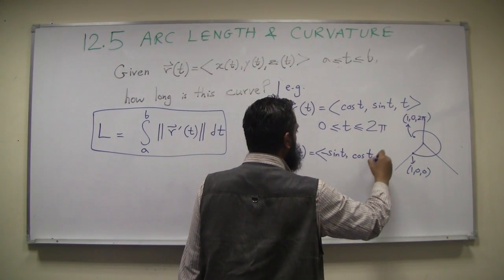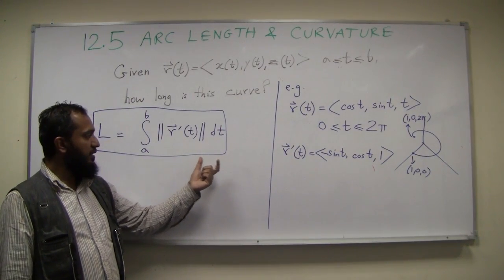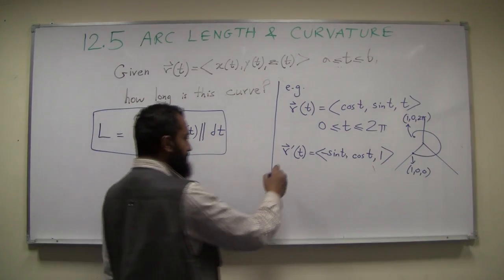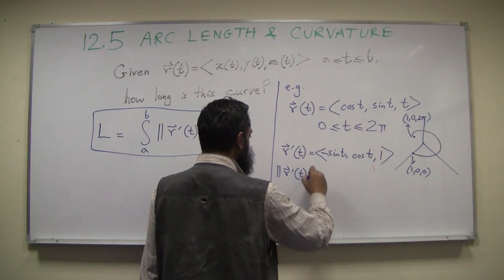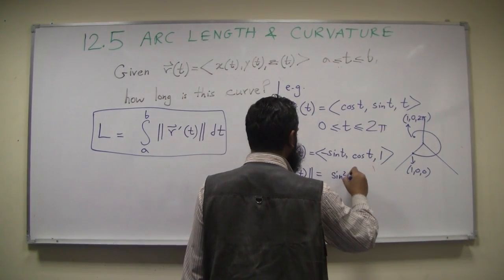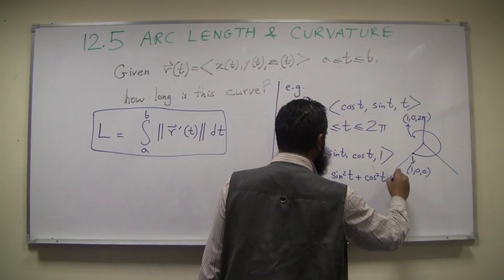We first find the tangent vector, the derivative, then we find its vector length. So this is going to be sine squared t plus cosine squared t plus 1 squared, all square rooted.